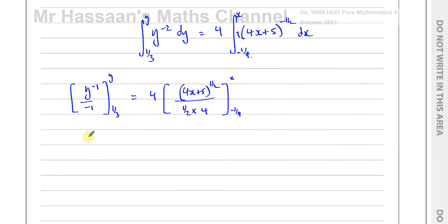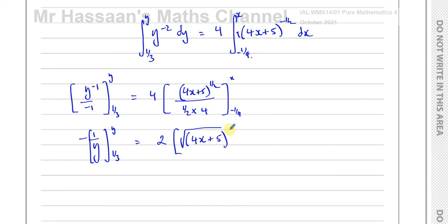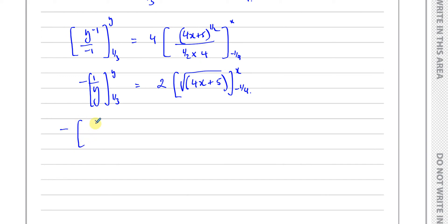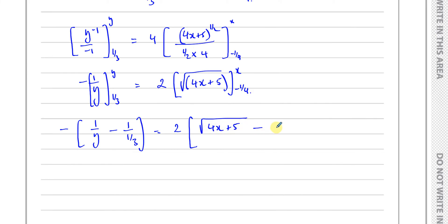Simplifying: the left side gives −1/y, evaluated between y and 1/3. On the right, a half times a quarter gives one eighth, and 4 divided by (1/2 × 4) simplifies to give a factor of 2. So I have 2√(4x+5), evaluated between x and −1/4. Substituting the lower limit: 4(−1/4) + 5 = −1 + 5 = 4, and √4 = 2. This gives −1/y − (−3) = 2√(4x+5) − 2(2).